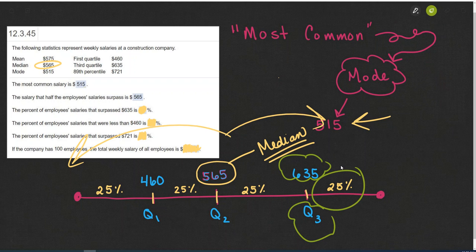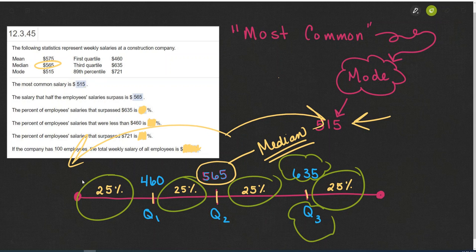We can see that there's only 25% of the employees that are making more than $635. So the percent of the employees' salaries that are surpassed is each of these three quartiles, 25, 25, and 25, or in other words, from the bottom up to quartile three is 75%, so 75%.